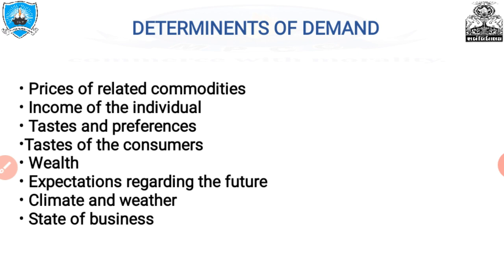The sixth determinant is expectations regarding the future. If a consumer expects the price of a commodity to rise in the future, they will decide whether to purchase the commodity right now or not. They will change demand at present even when the present price remains the same. Similarly, if consumers expect their incomes to rise in the near future, they may increase the demand for a commodity just now.